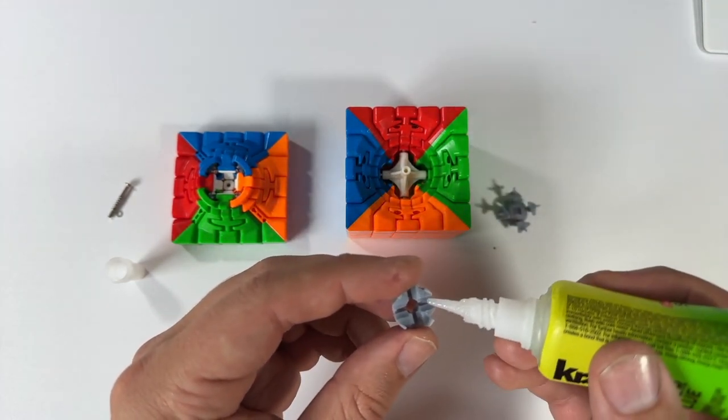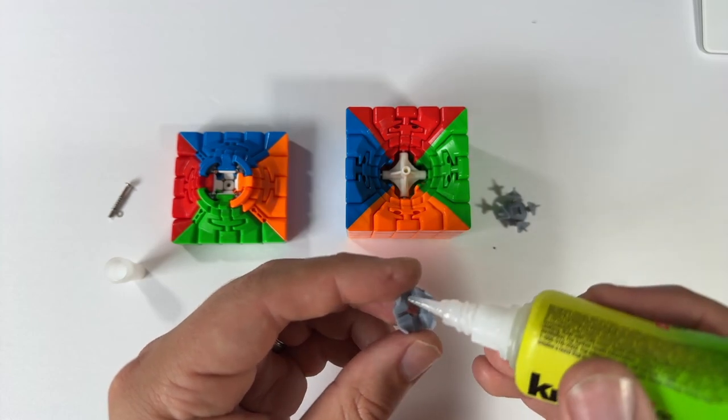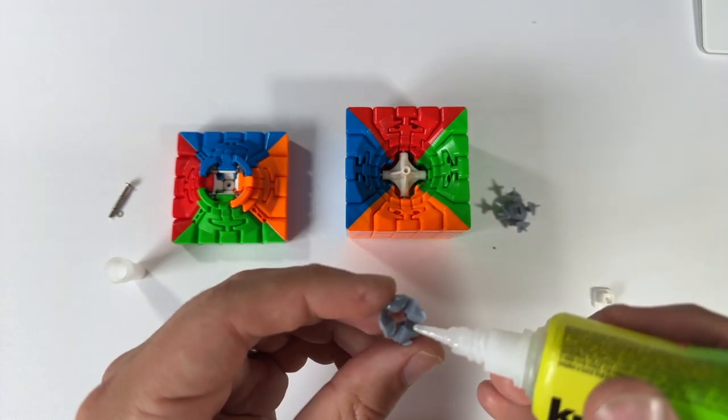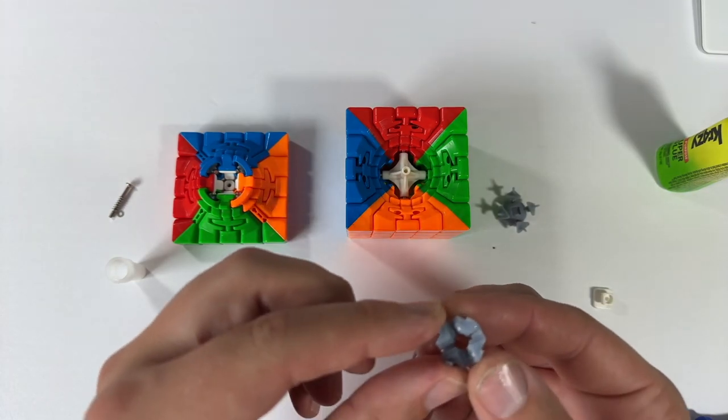Apply a small amount of glue to each axis of the magnetic core and firmly press it onto the core of the cube. Let it rest for a few minutes for the glue to fully cure.